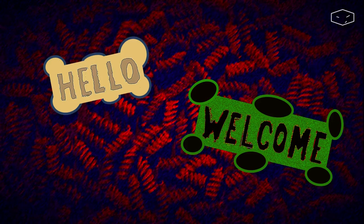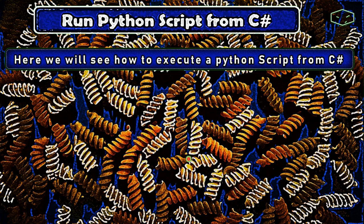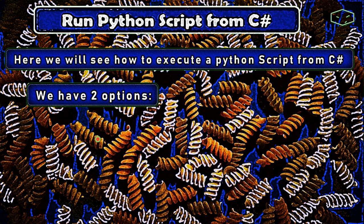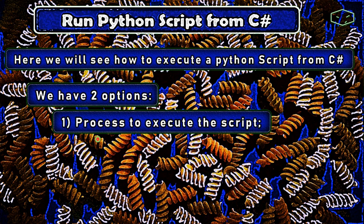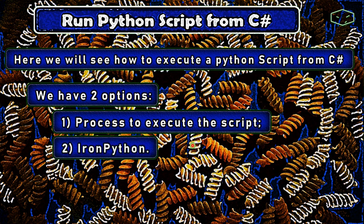Hello and welcome. Here we will see how to execute a Python script from C#. We have two options for that. The first one, we need to create a process to execute the script, and for this we need to have Python installed in the system. The second one is using IronPython. IronPython is an implementation of Python in .NET and we need to install the libraries in our project.